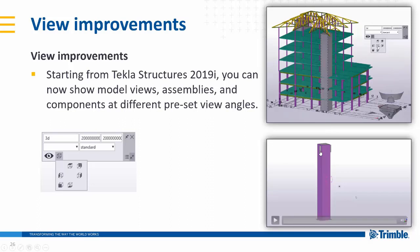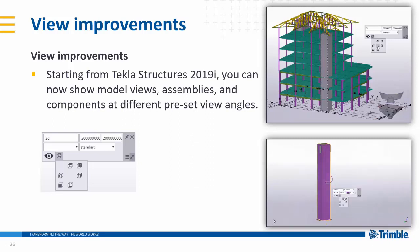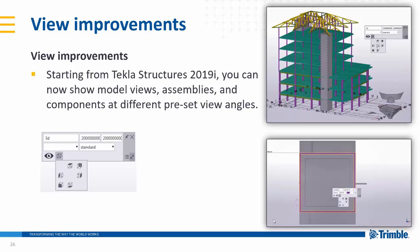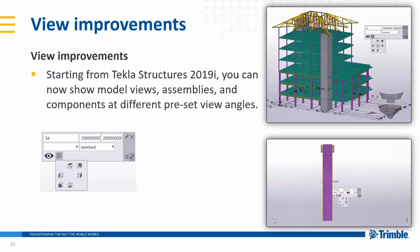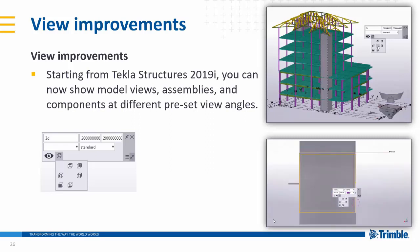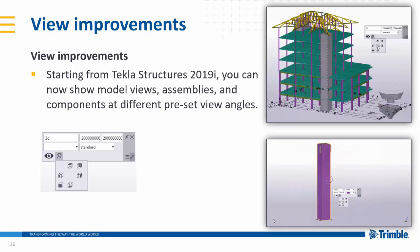So if I've picked up an assembly here, you can see I've just highlighted an assembly in the model. Again I can use the mini toolbar, highlight the predefined viewing positions and we can quickly jump around front, back, left, right, top, bottom, ortho and ortho angles — different views.